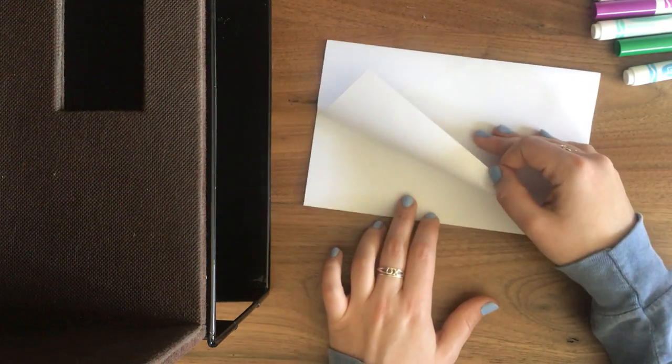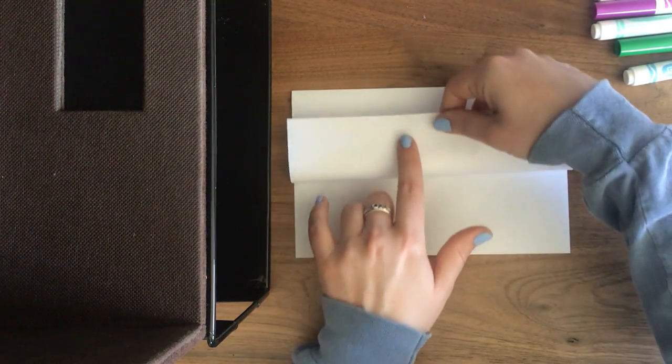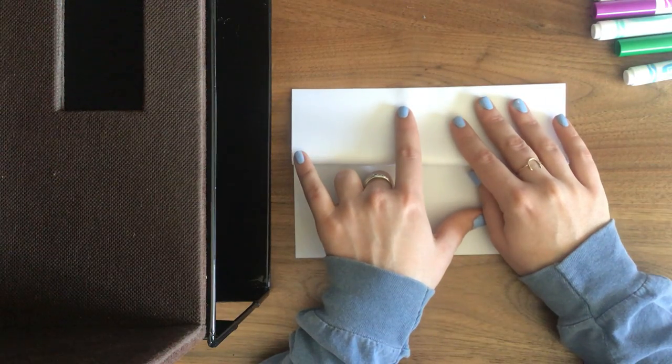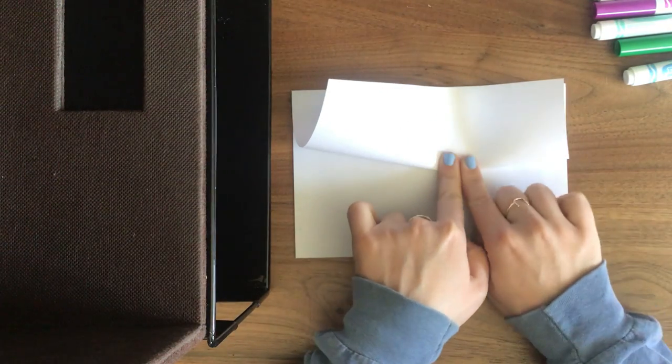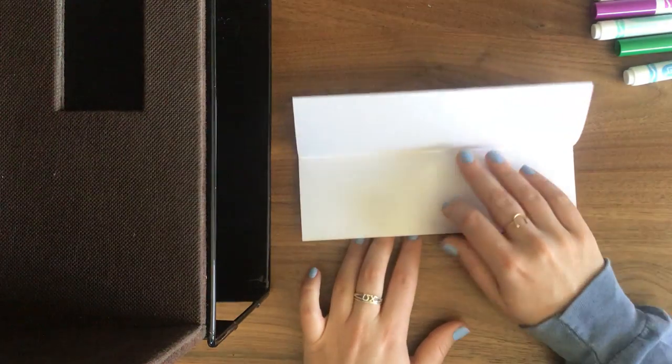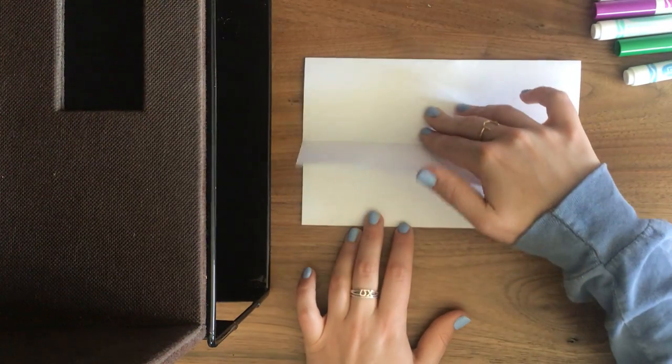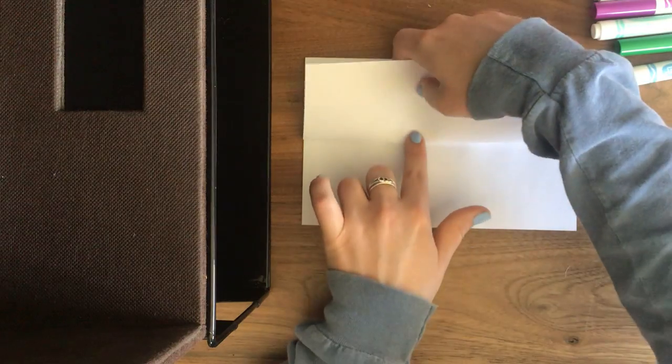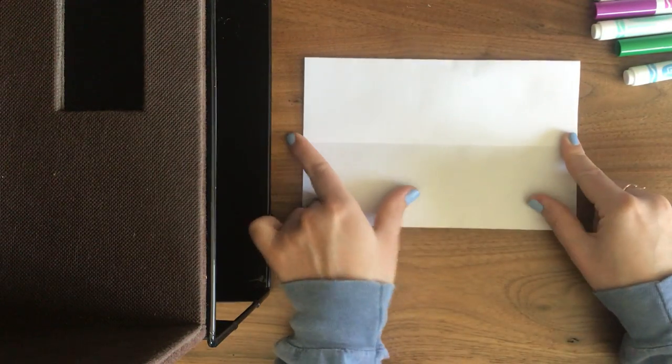Now you take the open part here and you meet the top of the folded part and you fold down. So I just took one of my flaps and I folded it up to my fold, folded it down.